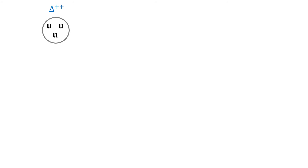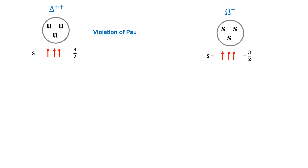Observing the quark model carefully, we see that the delta++ baryon is made up of three identical up quarks, and the spin of delta is 3/2, which is possible only when all three quarks are aligned in the same direction. However, according to the Pauli exclusion principle, only one particle of the same quantum numbers can occupy one state — not two or more. Similarly, the omega− baryon is also made up of three identical strange quarks. To solve this puzzle, the quark color hypothesis was proposed.